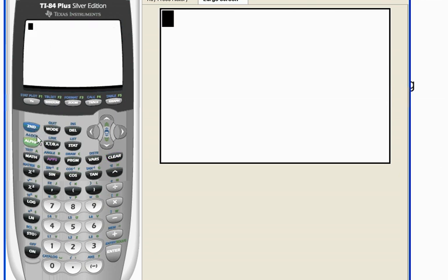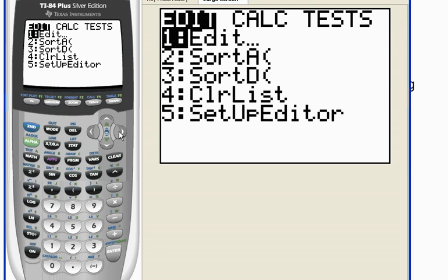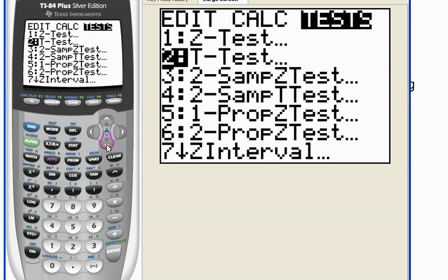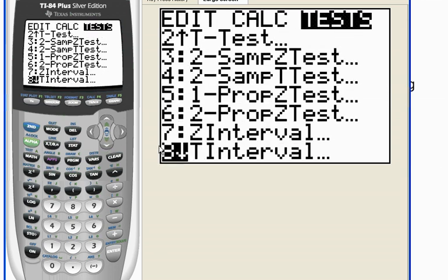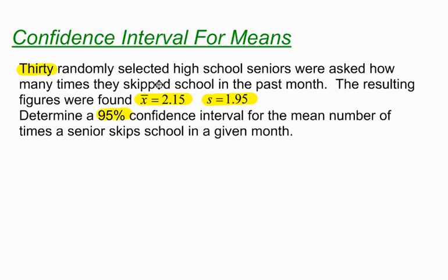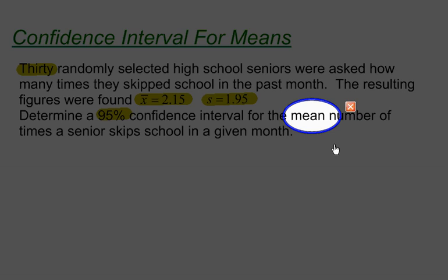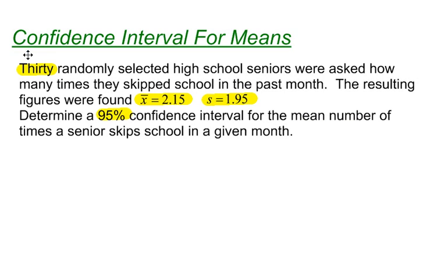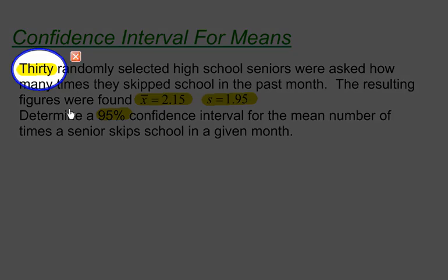I'm going to jump to my calculator. If I hit Stats and go over to Tests and scroll down, this is a T interval. The reason I know it's a T interval is because it's for means — I'm looking at the mean number of times a senior skips. The other thing is that my sample size is relatively small. 30 is kind of the cutoff point; if you get 30 or less, it's definitely going to be a T interval.